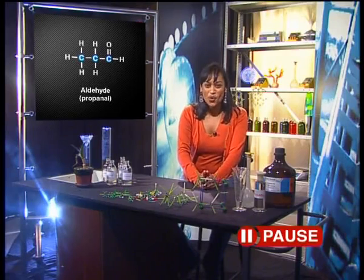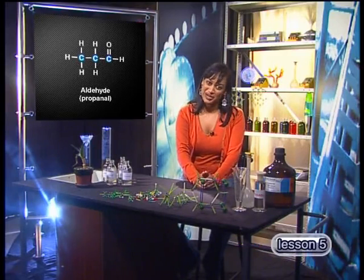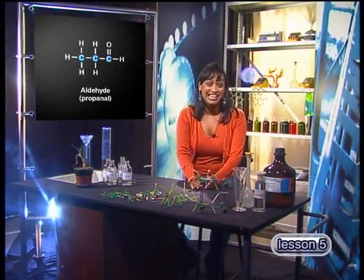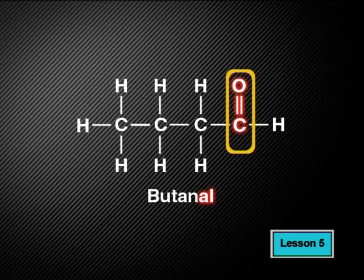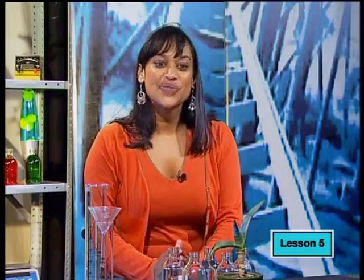Now try to draw one of your own — draw a molecule of butanal. I'm sure you drew a molecule that looks like this. The prefix BUT- indicates that the aldehyde must contain four carbon atoms. Remember to place the double-bonded oxygen atom, the carbonyl group, at the end of the molecule's structure on the first or last carbon. So that's how to draw and name an aldehyde molecule: name the backbone and then end the name with AL.